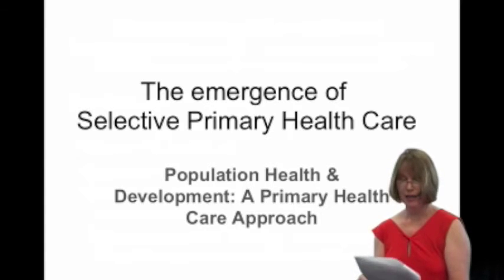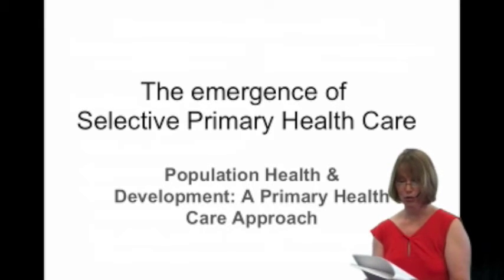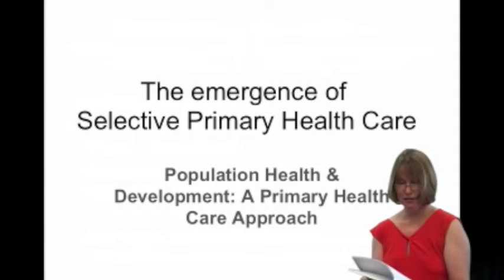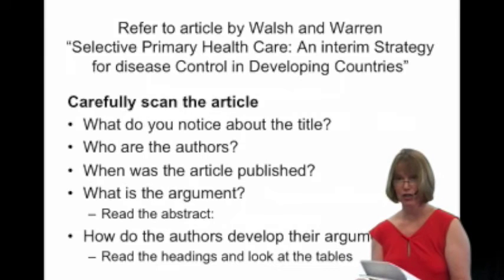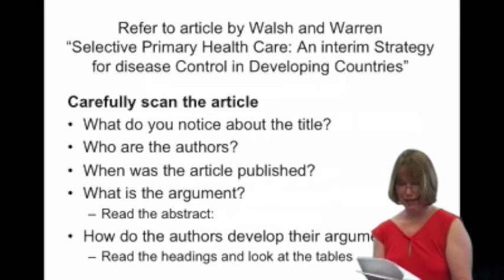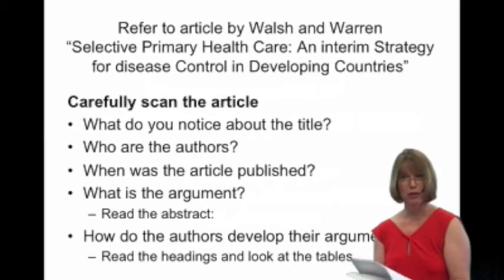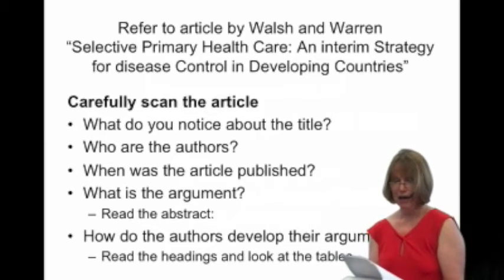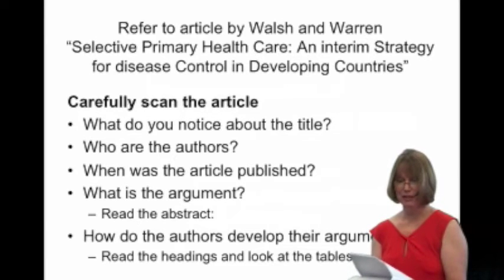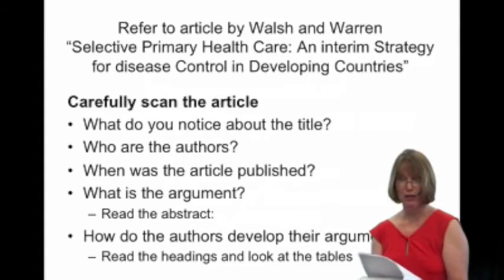The next heading is 'Targeting Diseases for Control,' where they set out four criteria that can be used to target diseases. The first is prevalence — how common is the disease and what proportion of the population are affected. The second is morbidity, or severity of disability — what effect does this disease have on the population? The third is the risk of mortality — the risk of dying from the disease. And the fourth is feasibility of control — how possible is it to control the disease, how effective is the intervention, and at what cost?